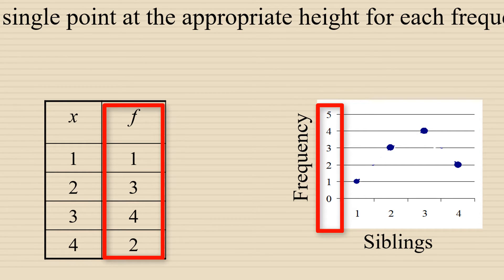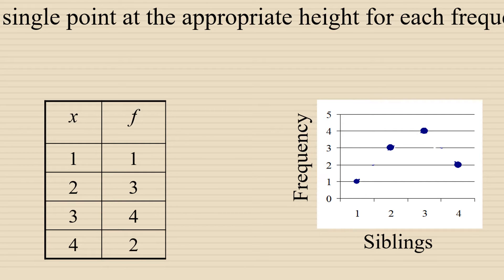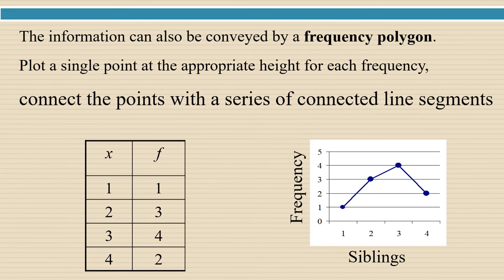The frequencies, or number of times that data value occurs, is along the vertical axis, 0 through 5, just like before when we looked at the histogram. We've plotted a point to represent the number of times each data value occurs. For example, the data value 3 occurs 4 times. After we plot those points, we connect the points with a series of connected line segments.